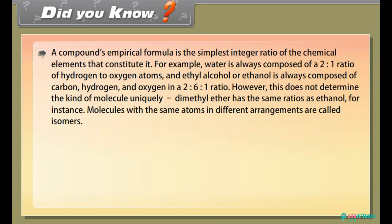Did you know: A compound's empirical formula is the simplest integer ratio of the chemical elements that constitute it. For example, water is always composed of a 2 is to 1 ratio of hydrogen to oxygen atoms, and ethyl alcohol or ethanol is always composed of carbon, hydrogen, and oxygen in a 2 is to 6 is to 1 ratio. However, this does not determine the kind of molecule uniquely.